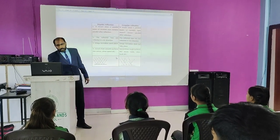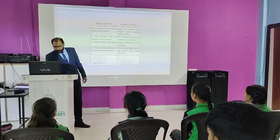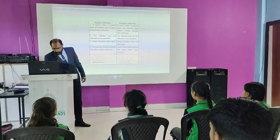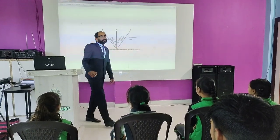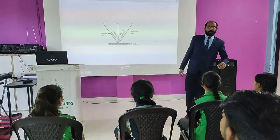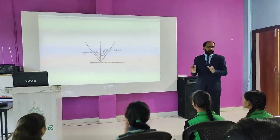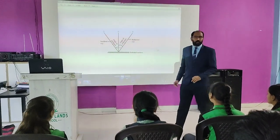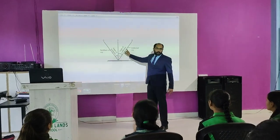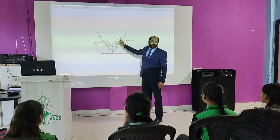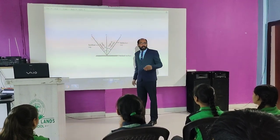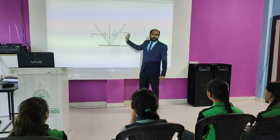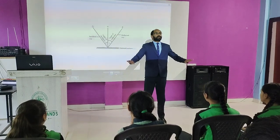Let us come to the topic of reflection of light once again. We have seen many objects. Now, what is the law of reflection? There are three laws of reflection. One: the angle of incidence is equal to the angle of reflection. Second: the normal line. Third: the incident ray, the normal, and the reflected ray will all lie on the same plane surface.